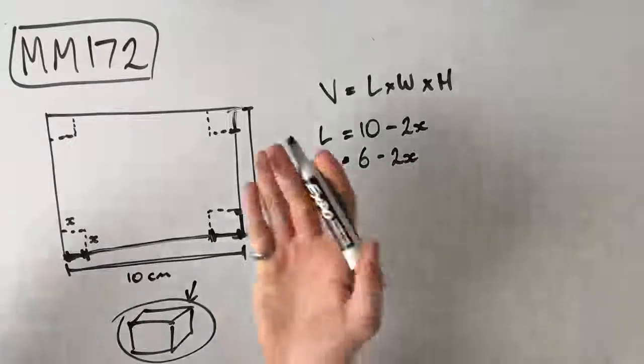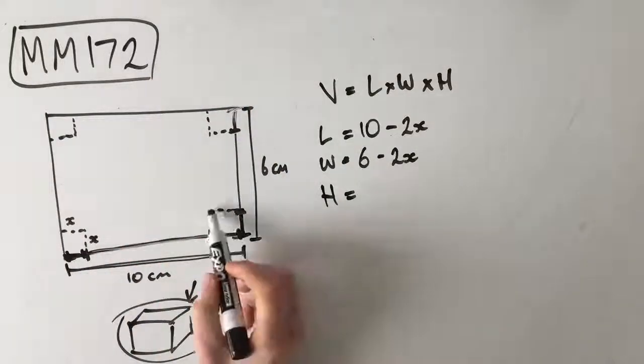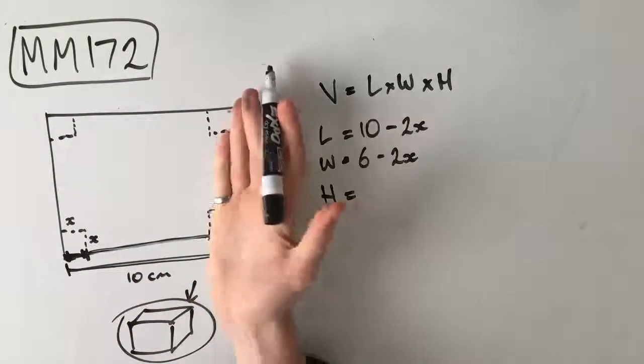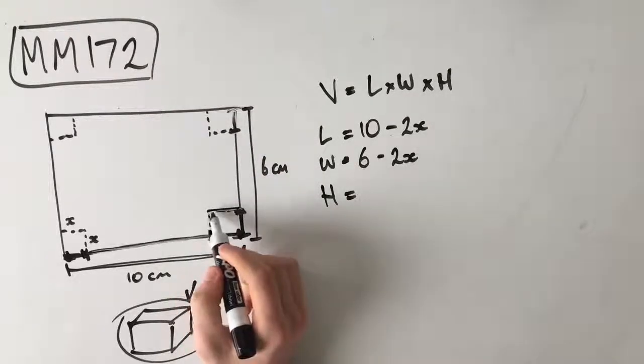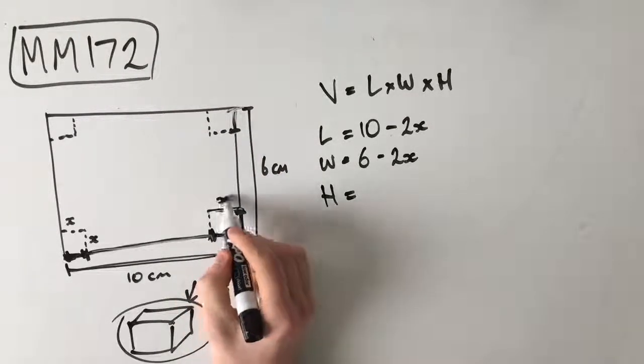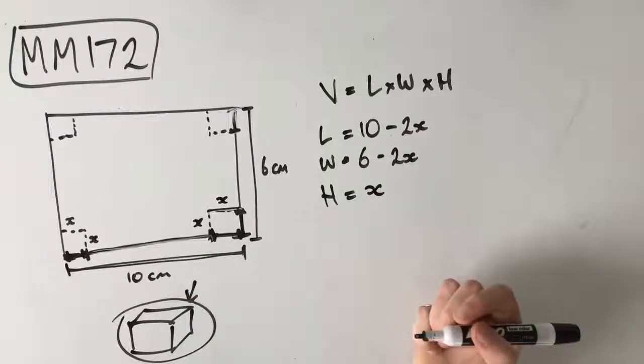We also need to find our height. When we turn up the sides of the box, our height is actually going to be this bit here, right? Because we're going to fold it up like that, which means that this side becomes our new height. And that is just x, right? Because we know that this is side length x.